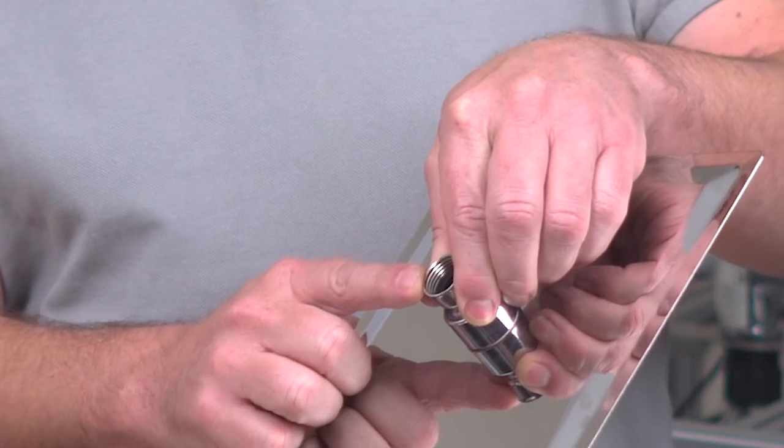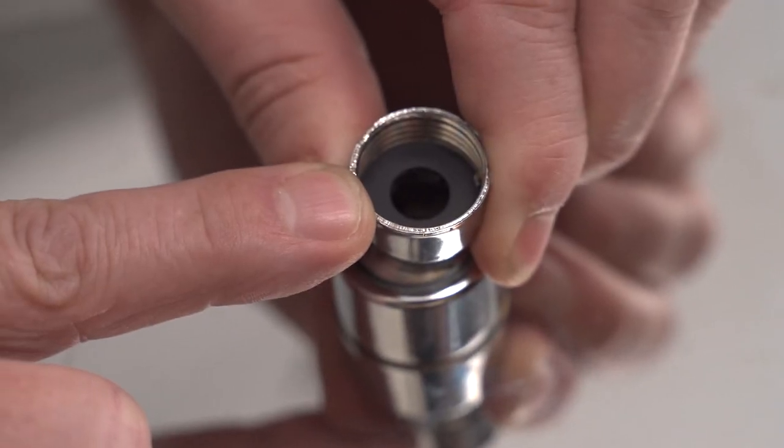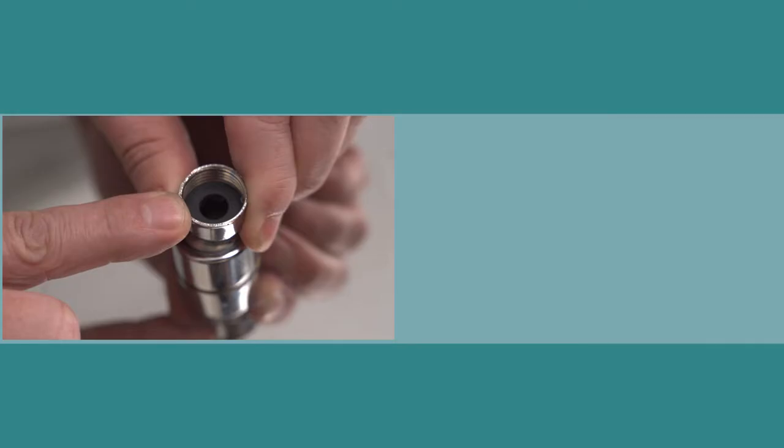Some showerheads only have a washer that is used to seal the showerhead to the fitting. This provides no flow regulation of the showerhead at all and that can quite easily cause an unnecessarily high flow rate.